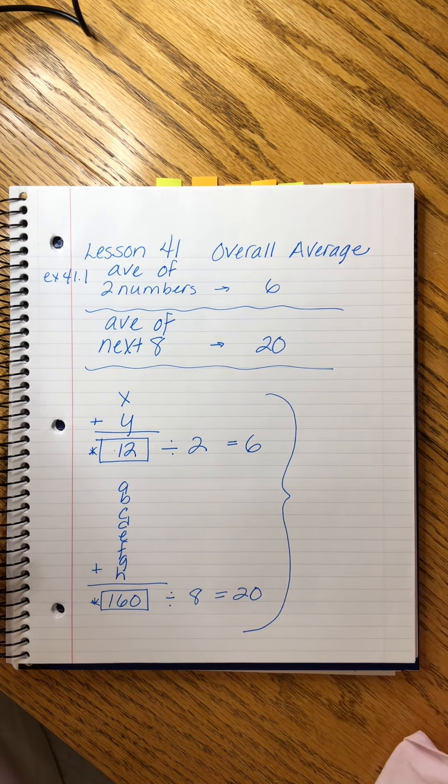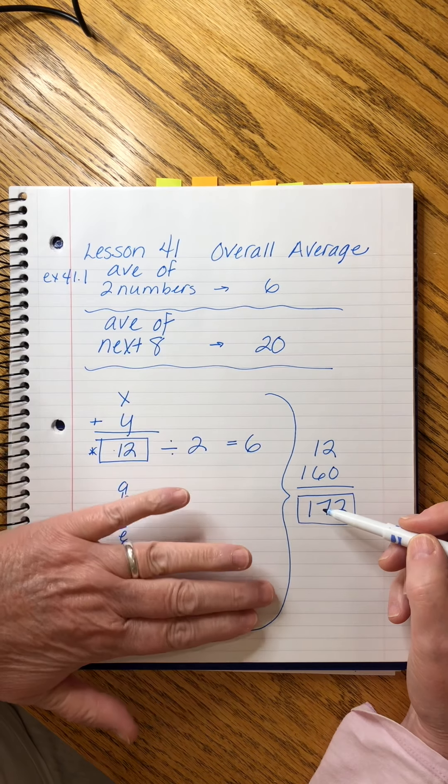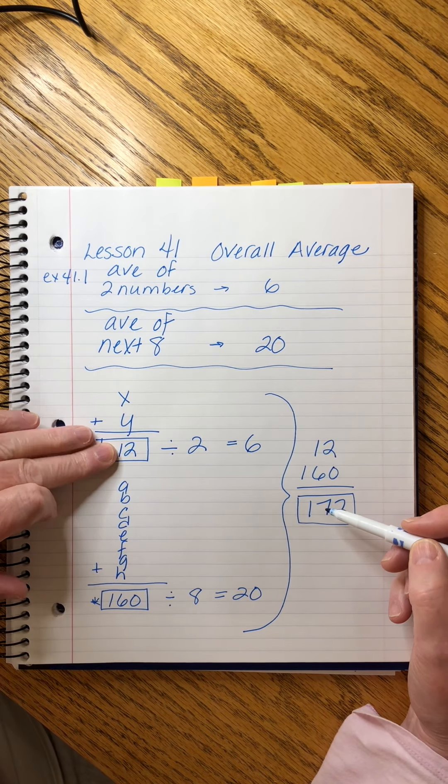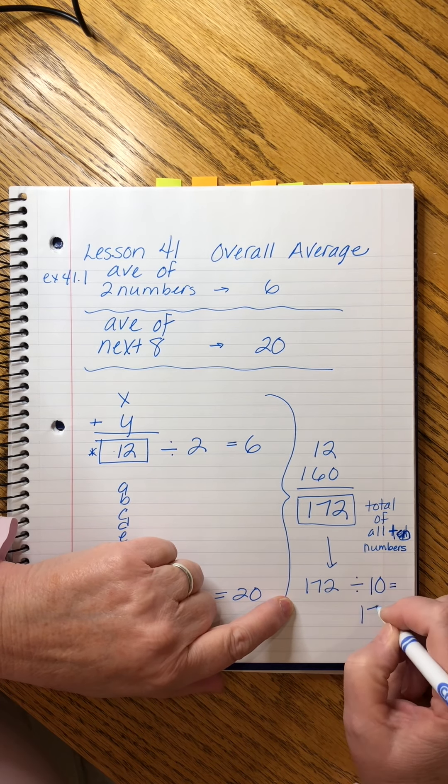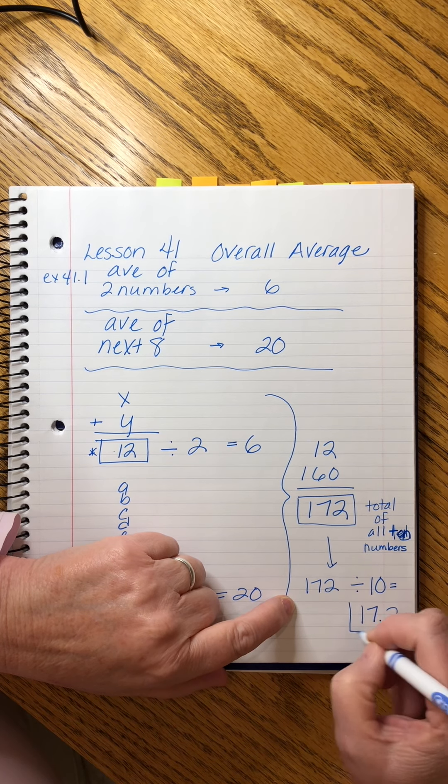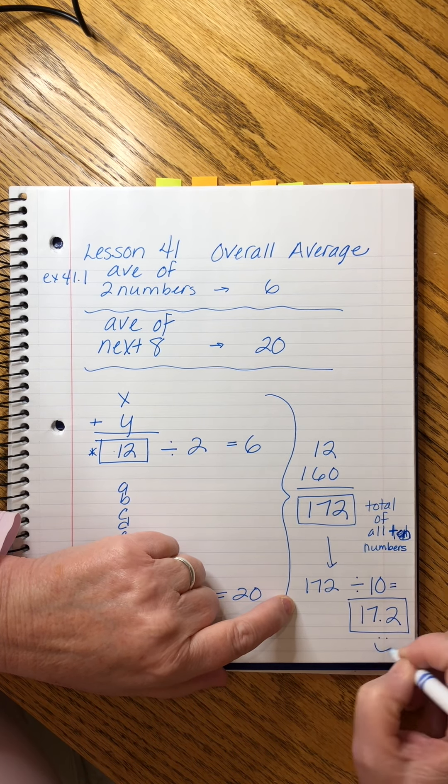Now what we want to do is combine all 10 numbers and find one overall average, but we still don't know what the individual numbers are. So we're going to use the fact that the first two added up to 12 and the eight added up to 160. Adding them together gives us 172 — the total of all 10 numbers. 172 divided by 10 gives us the overall average, which is 17.2.